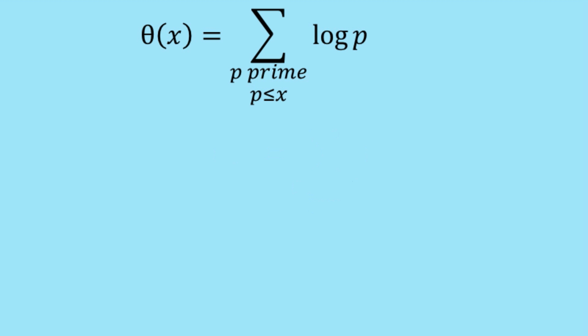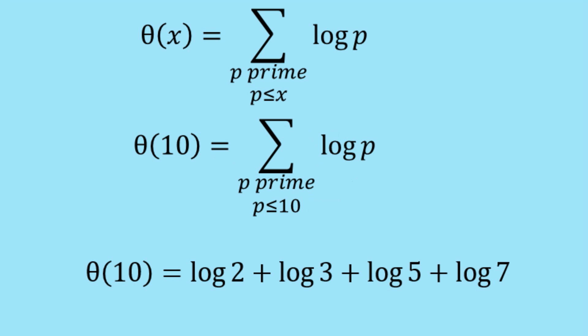So to start this off, we need to introduce a new function, theta(x). And theta(x) is the sum for all primes p, p less than or equal to x of log p. So instead of having a 1 there, we've now got log of p. So here's an example, theta(10) equals the sum for all primes p less than or equal to 10 of log p. And that means that theta(10) equals log 2 plus log 3 plus log 5 plus log 7.